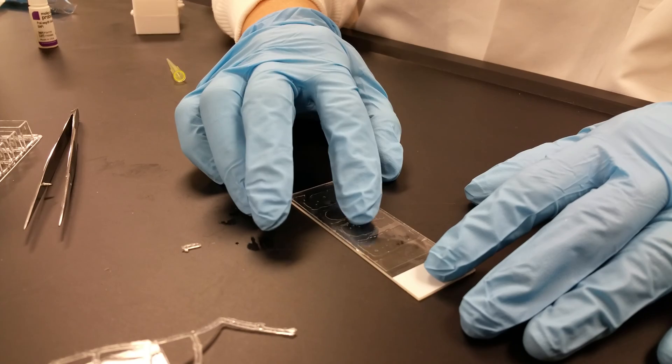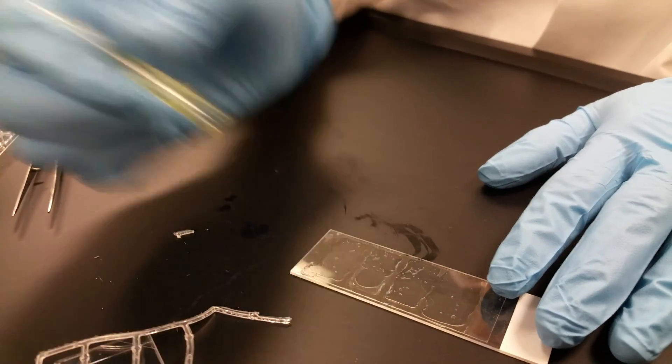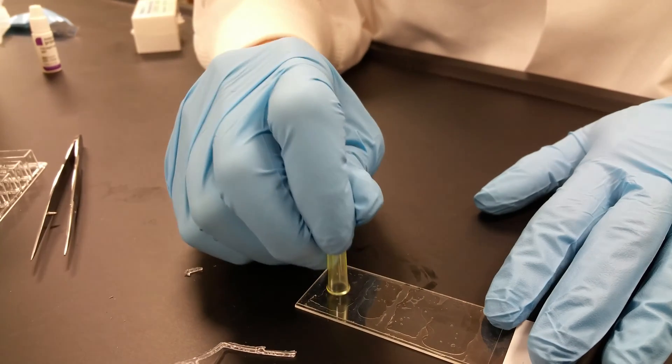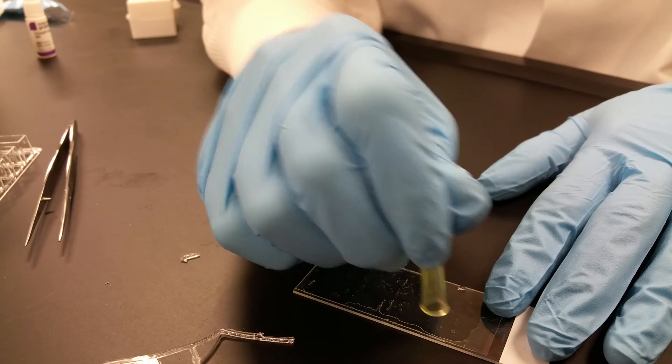As you can see, I still have some bubbles. A way to get rid of that is again to take a pipette tip and just sort of press it down, and the bubbles will move to the side.